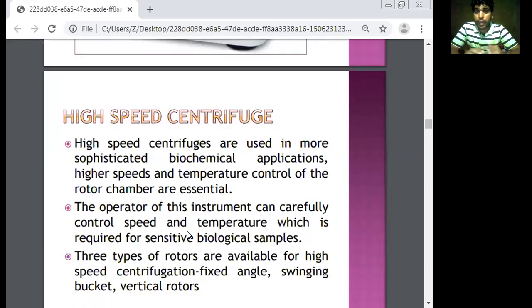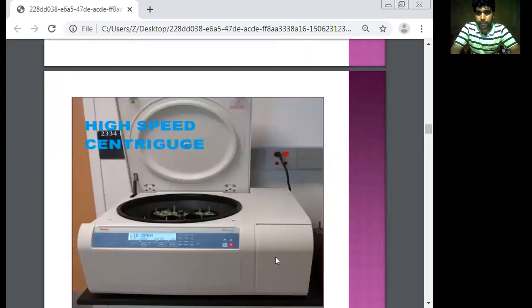High speed centrifuge are used in biochemical applications with higher speed and temperature control of the rotor chamber. This is a very digital system and speed is, if we count, 10,000 RPM to 20,000 RPM. That means we can separate more components.